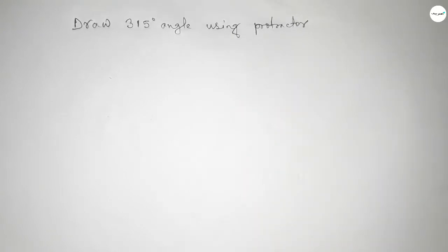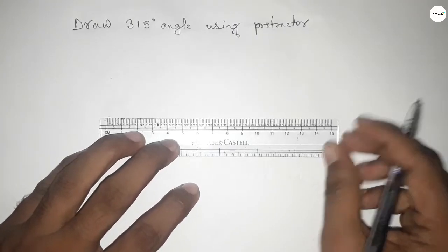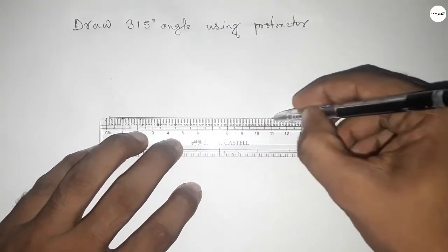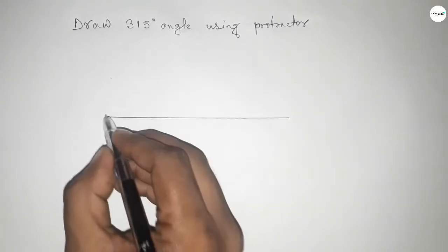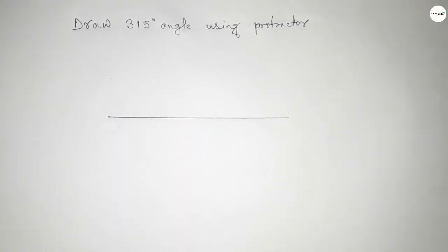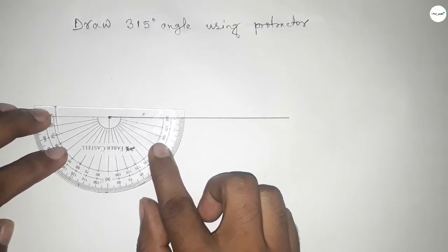Let's start the video. First of all, we have to draw a straight line of any length. Next, mark a point here to draw the 315-degree angle on this point. Now, put the protractor perfectly on the line.